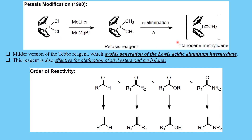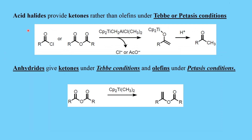The advantage of the Petasis reaction is that it eliminates the use of any Lewis acids, so functional groups sensitive to Lewis acids are easily tolerated. Regarding reactivity order of carbonyl moieties: aldehyde is more reactive than ketone, which is more reactive than ester, followed by amide. This is important to keep in mind.